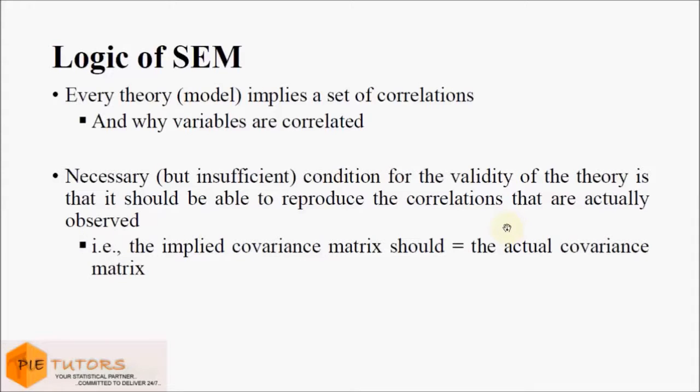A necessary but insufficient condition for the validity of theory is that it should be able to reproduce the correlations that are actually observed in our data. The implied covariance matrix from our model should be equal to the actual observed covariance matrix.